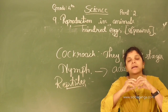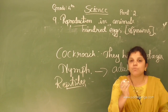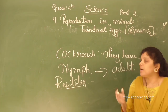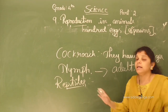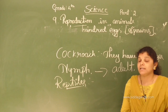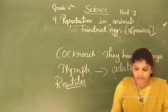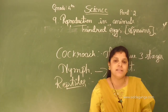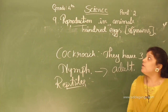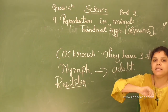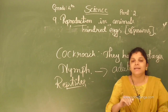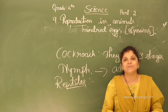The egg breaks and the baby crocodile comes out. This is all about reproduction in animals. Thank you, my dear students.